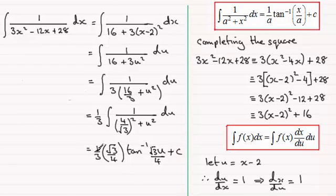So tidying this up now we've got 1 times root 3 which is root 3, we've got 3 times 4 which is 12, and then multiplied by the inverse tan of root 3 times u, u being x - 2, so x - 2 there over the 4 and then plus the constant of integration c.